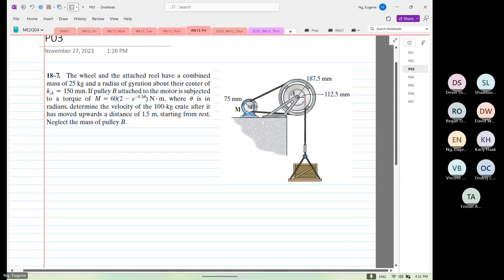So let's start. The wheel and the attached reel have a combined mass of 25 kilogram. And the radius of gyration about the center Ka is equal to 150 millimeters. So what we see over here, whenever you see a diagram, label them if you can. This is the wheel and reel.